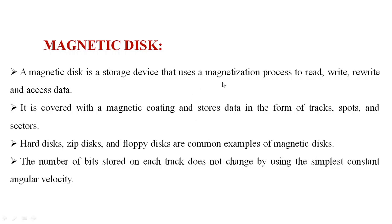Magnetic disk is a storage device that uses the magnetization process to read, rewrite, and access the data. It is covered with a magnetic coating and stores the data in the form of tracks and sectors. Hard disk, zip disk, and floppy disk are common examples of the magnetic disk.